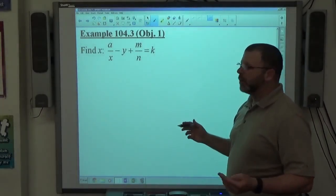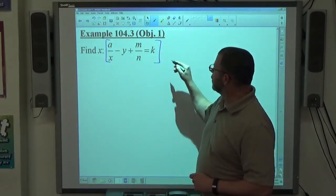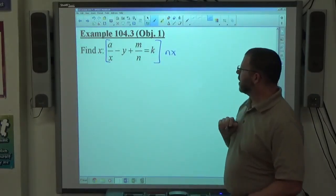If there were parentheses, we'd deal with that, but there aren't, so we just deal with the fraction issue. The least common denominator of all the fractions is NX or XN. Take your pick, however you want to write it.